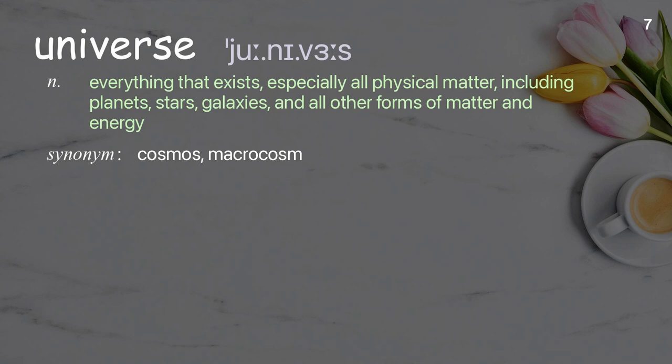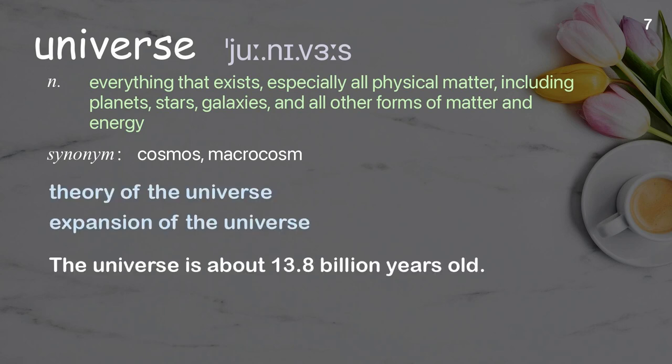Universe: everything that exists, especially all physical matter, including planets, stars, galaxies, and all other forms of matter and energy. Examples: theory of the universe, expansion of the universe. The universe is about 13.8 billion years old.